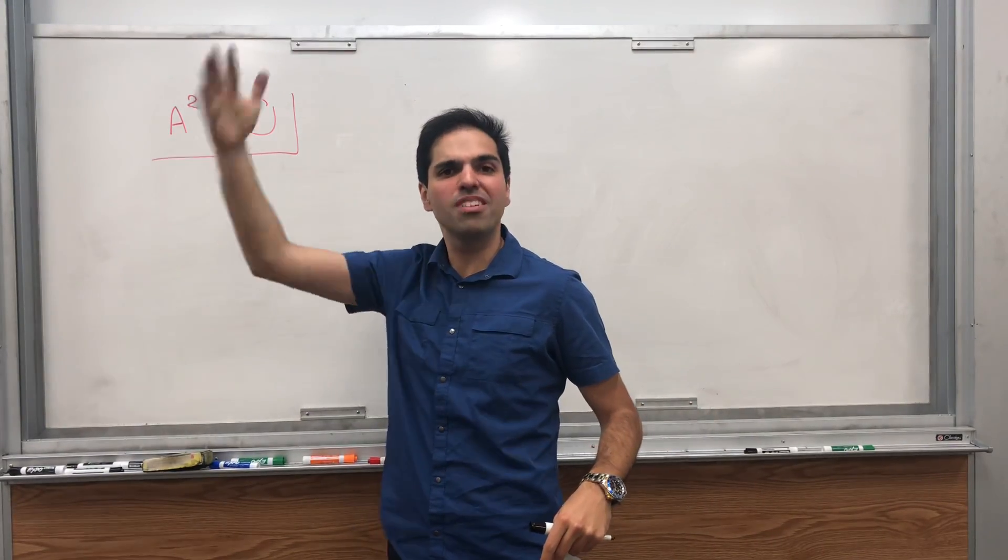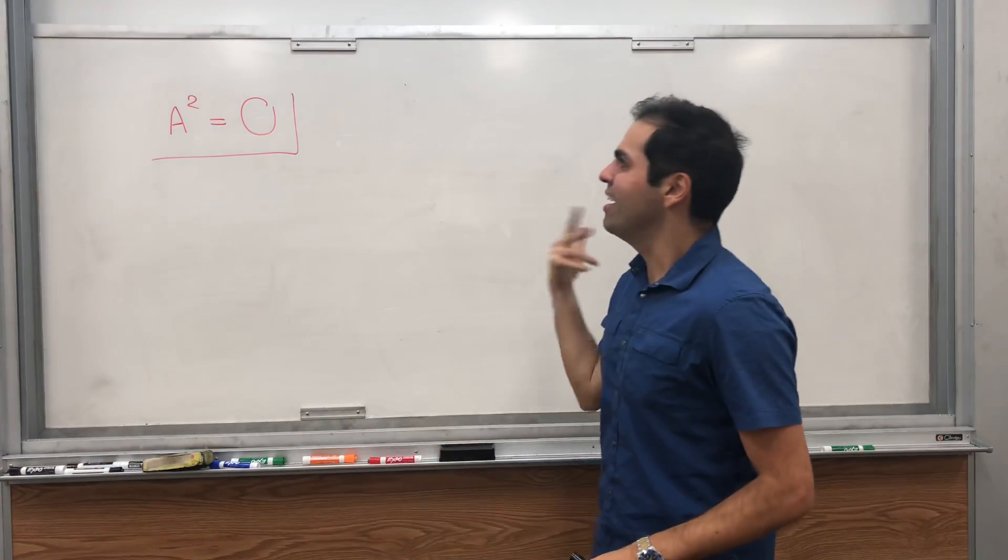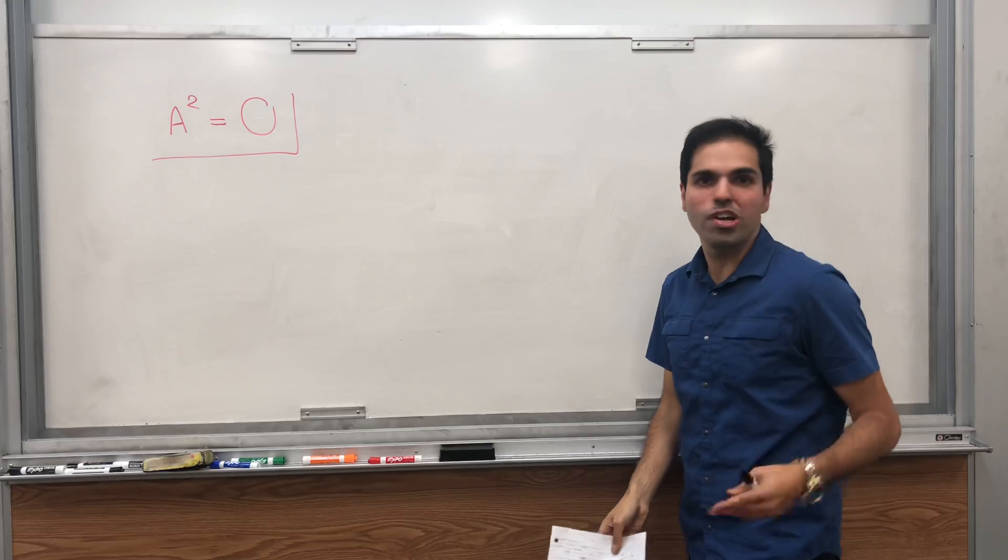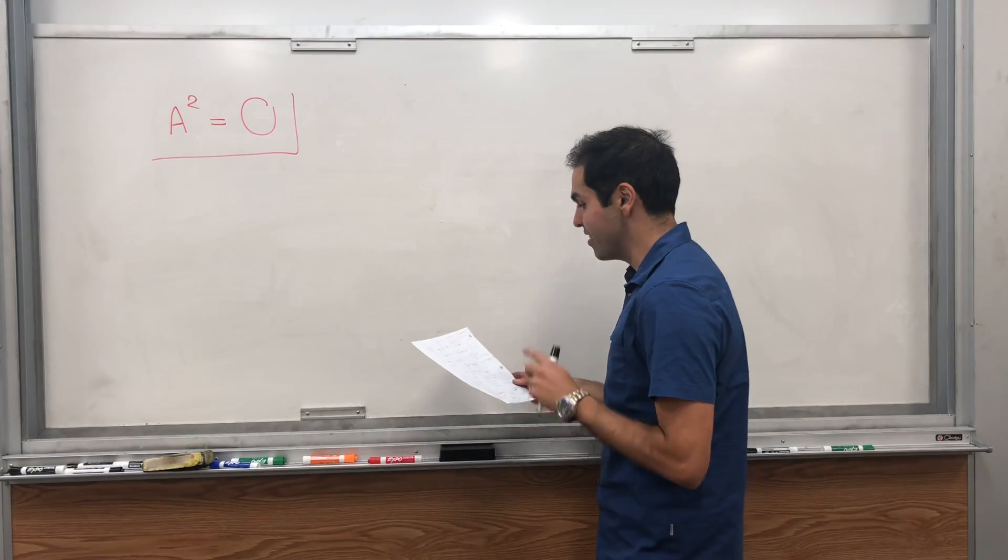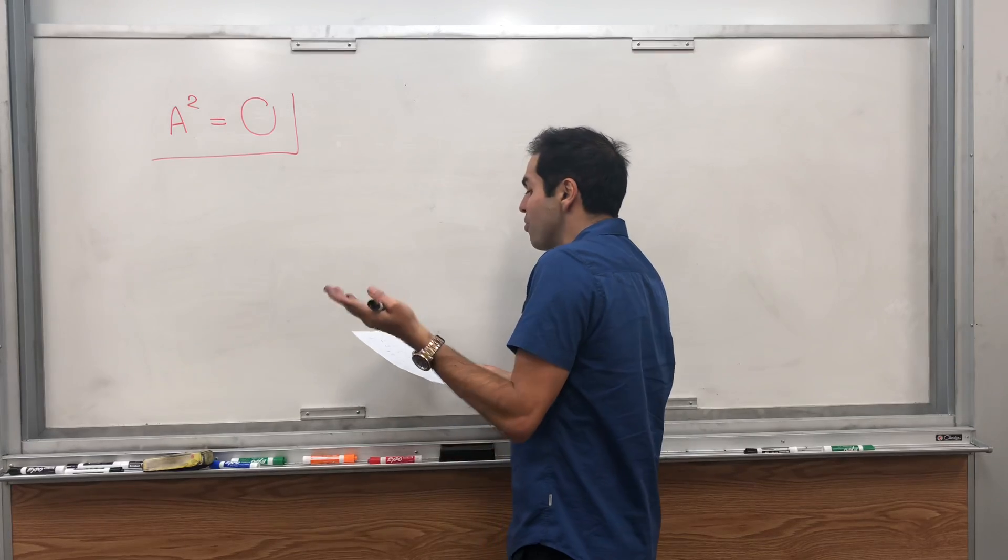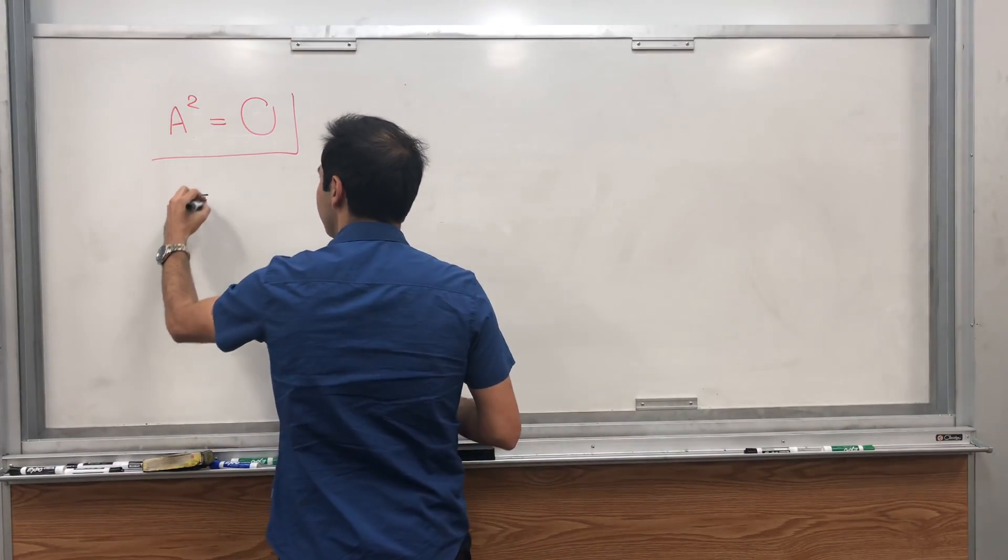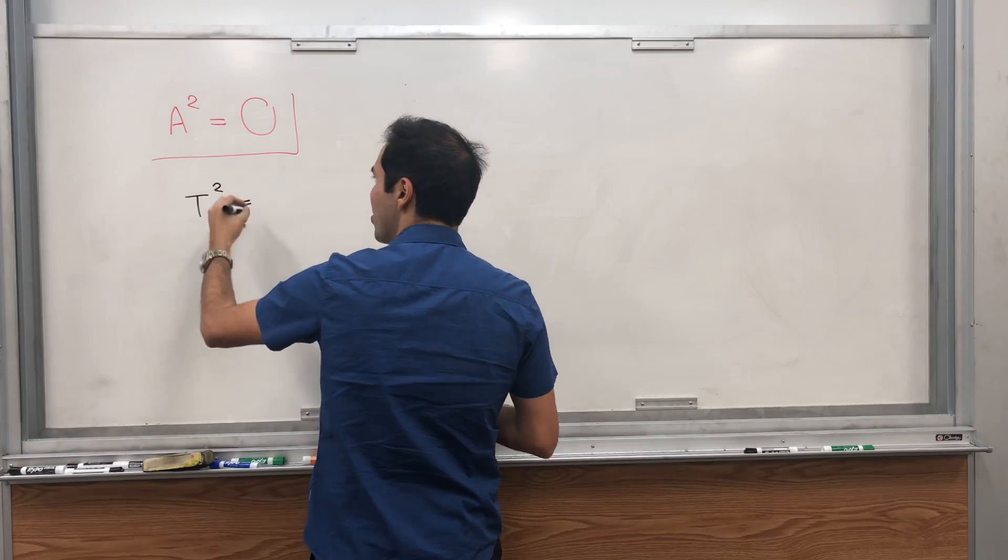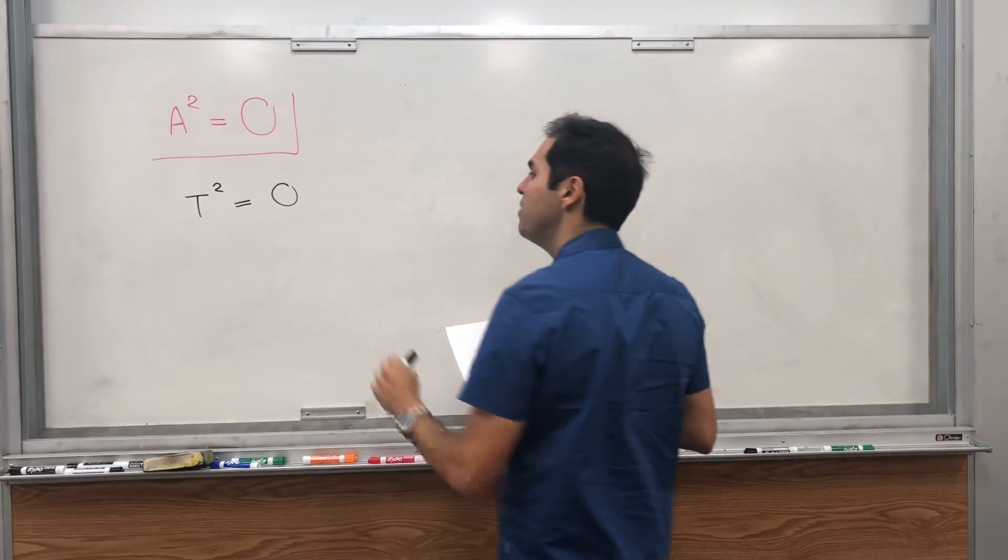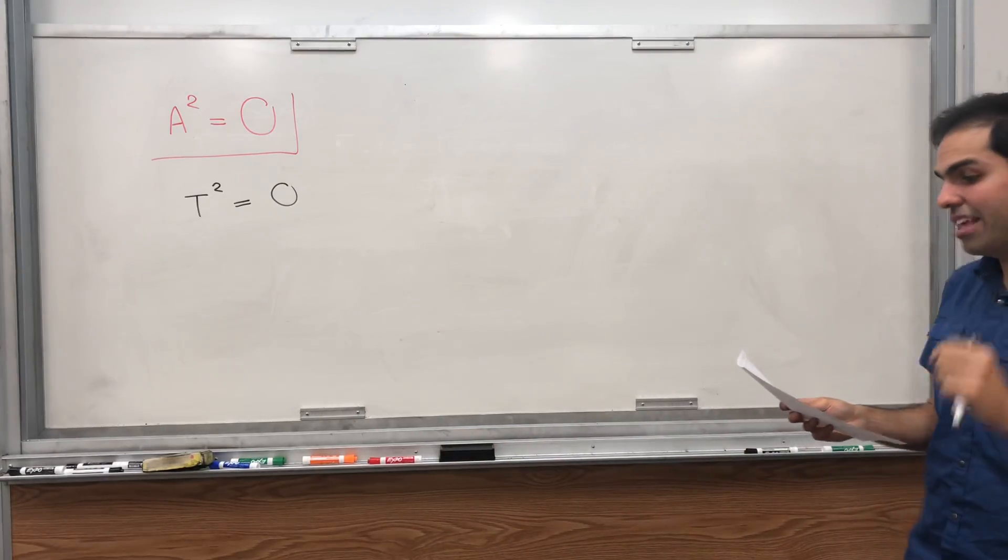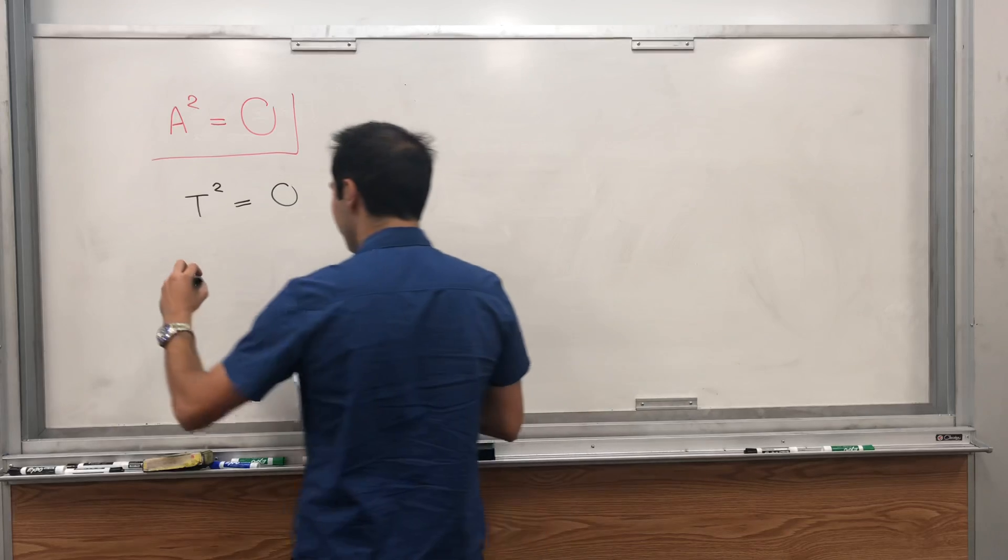the number of columns of A must be equal to the number of rows of A, and that's why this only works for square matrices. Otherwise, it wouldn't make sense to talk about A squared. And in particular, what we would like to find is the linear transformations T,